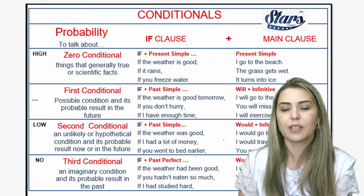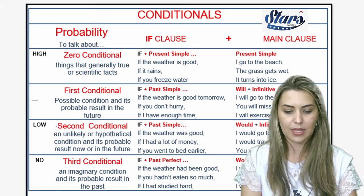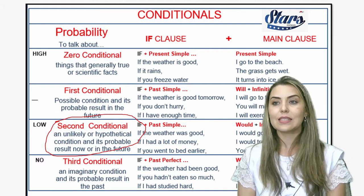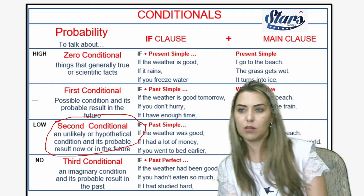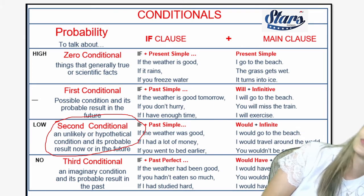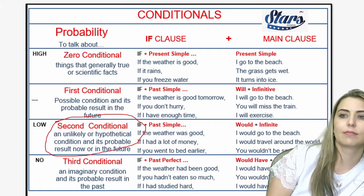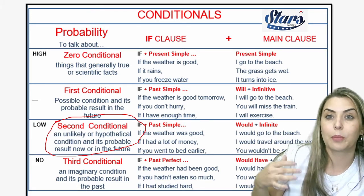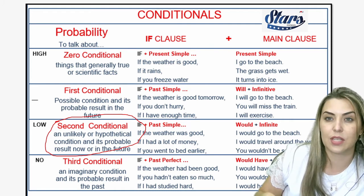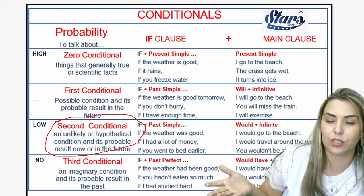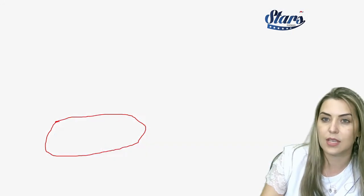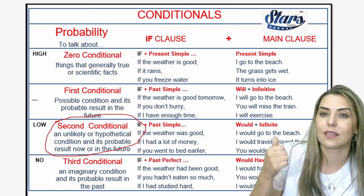Now let's finish today's lesson. Today's subject is second conditional. But to talk about second conditional, let's remember that there are four types. I'm only showing you the chart so you remember they exist — zero conditional, first conditional, second conditional, and third conditional.